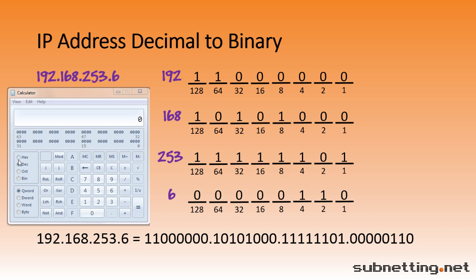Notice on the left there are 4 different bases to choose from: Hexadecimal, Decimal, Octal, and Binary. We didn't cover octal in this lesson, because it isn't used very often. We're in decimal mode, so let's type in our number, 192. Now we can click on Binary to see how it looks in binary. Great, that looks just like the number we calculated. Let's try the next number.